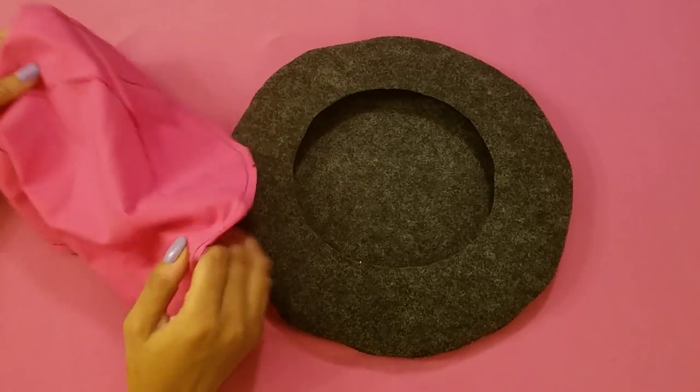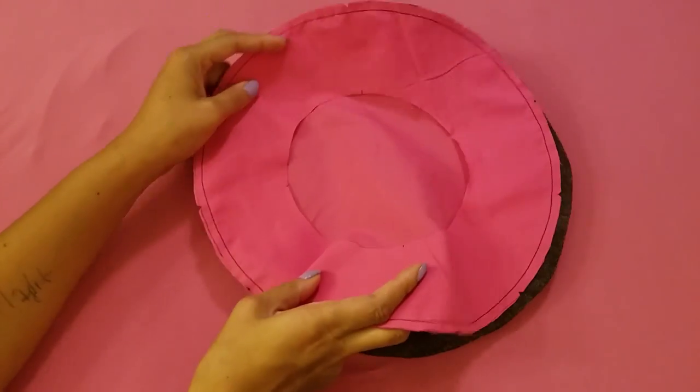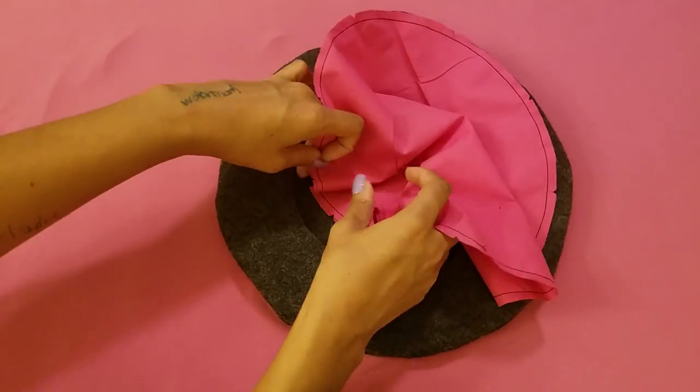If you are making yours with a lining, this is the step that you will put it in. So you are going to take your lining that is still inside out and put it inside the hat.